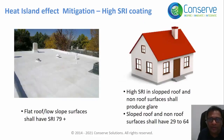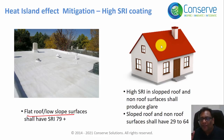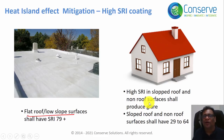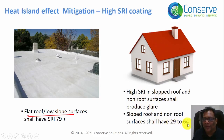High SRI coating is well-suited for flat or low-sloped roofs because the reflected radiation goes directly into the sky without producing glare. On sloped roofs or non-roof surfaces such as parking or driveways, high SRI coating may produce glare. Therefore, for sloped roofs and non-roof surfaces, the SRI should be between 29 and 64, and not greater than 64.